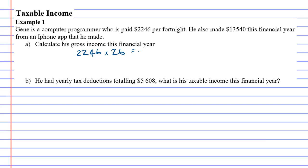This gives us $58,396. Now Gene also gets the extra money from the iPhone app, so now we just need to add together these two incomes.